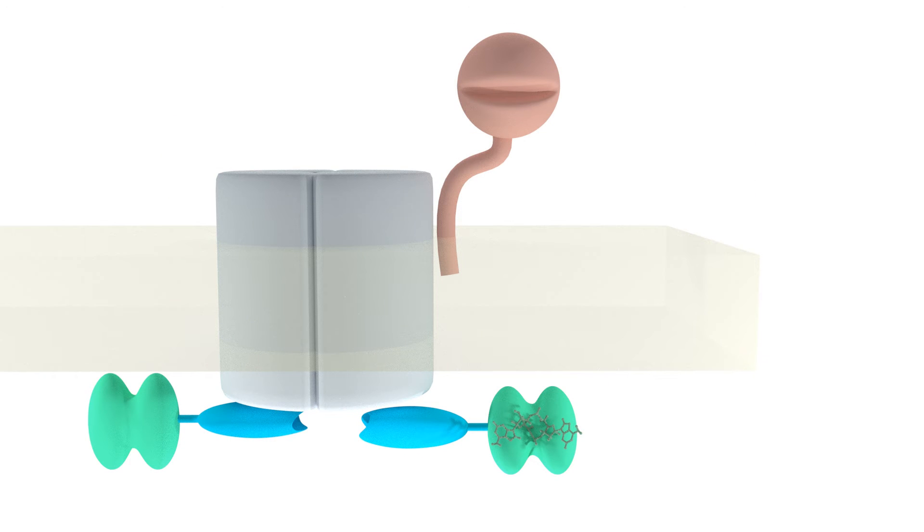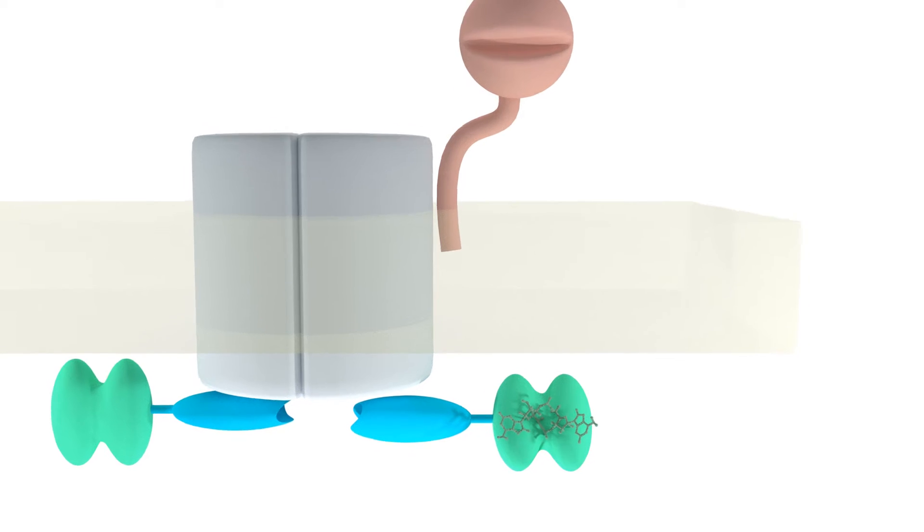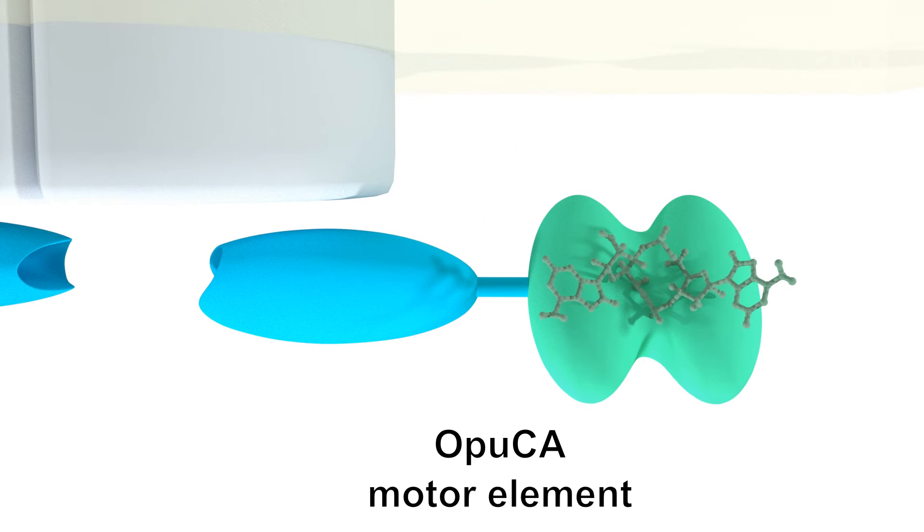In our recent study, we were able to identify an additional target of cyclic di-AMP in Staphylococcus aureus, the ABC transporter component, OPUCA.